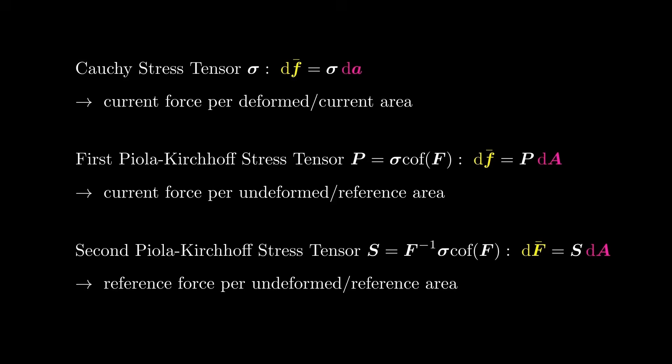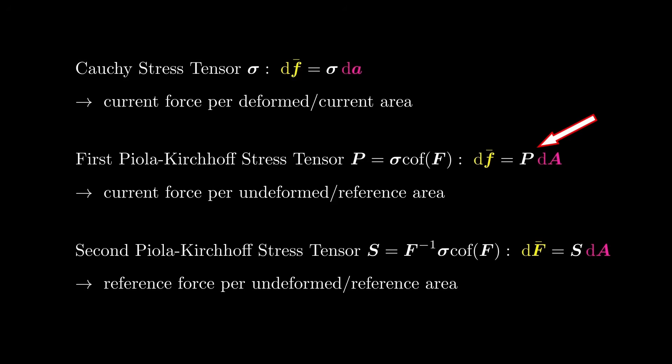You should note that you may encounter different definitions of stress tensors in textbooks and papers. In this video we defined the stress tensors so that the force is obtained by multiplying the stress tensor by the area element vector. Some authors use a slightly different convention in which the transpose of the stress tensor is multiplied by the area element vector to obtain the force. For the Cauchy stress and second Piola-Kirchhoff stress this distinction is irrelevant because both are symmetric, but the first Piola-Kirchhoff stress is not symmetric in general, so the chosen convention matters. Always check which definition is being used and remain consistent throughout your analysis.